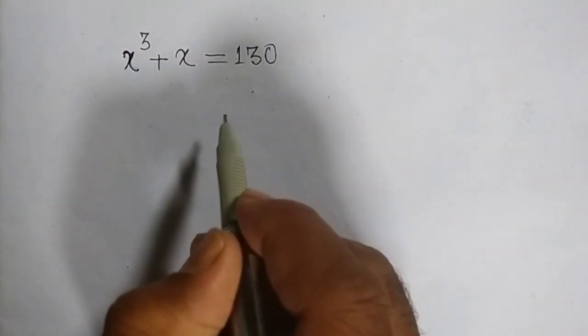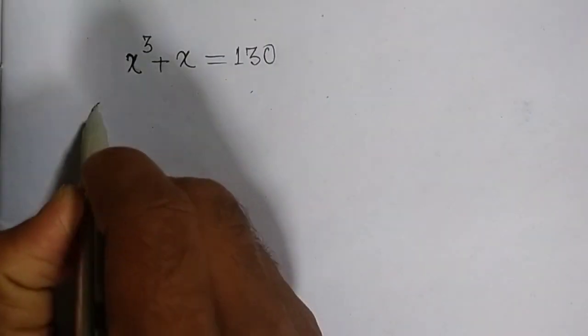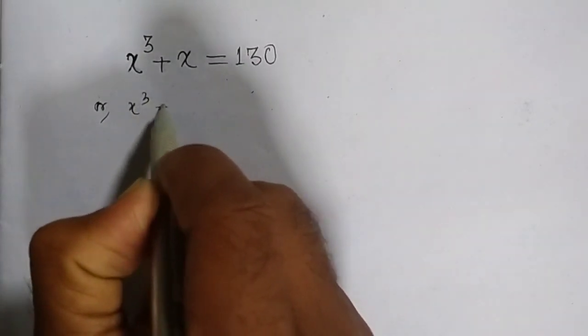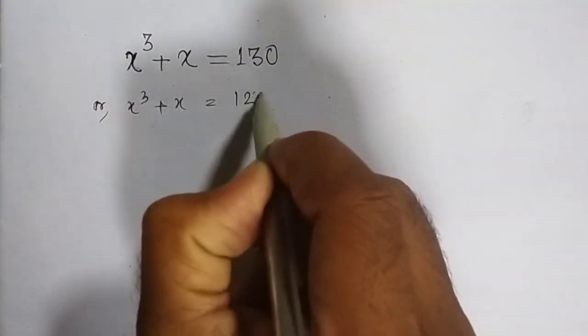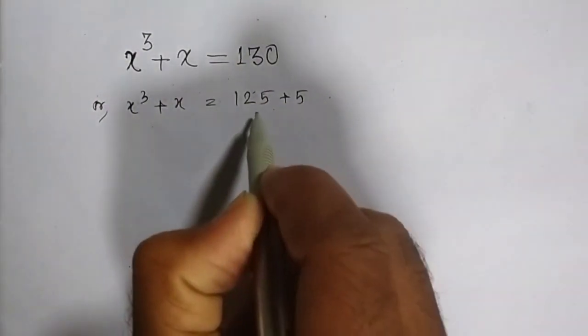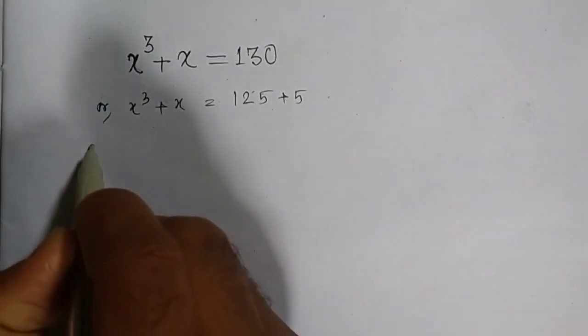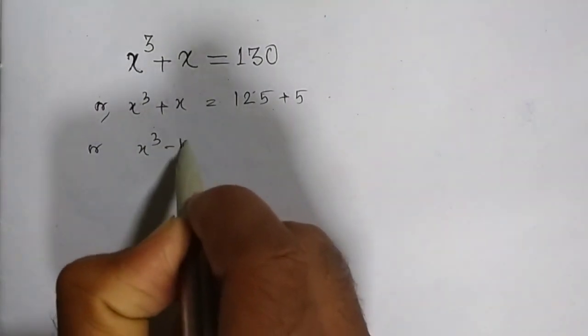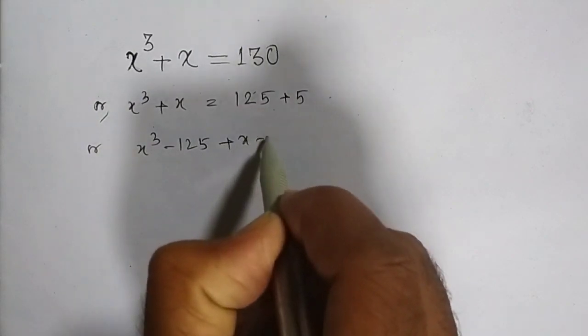Friends, find the real roots of this equation. Now this equation can be written as x³ + x equals 125 + 5. Taking this to the left-hand side, we have x³ - 125 + x - 5.